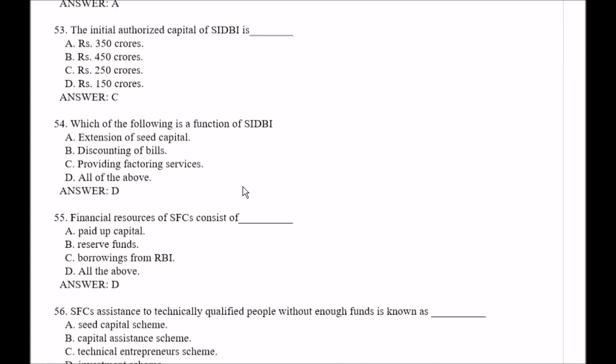Question number 53: The initial authorized capital of SIDBI is — Option A, rupees 350 crores; Option B, rupees 450 crores; Option C, rupees 250 crores; Option D, rupees 150 crores. The right answer is Option C, that is rupees 250 crores.